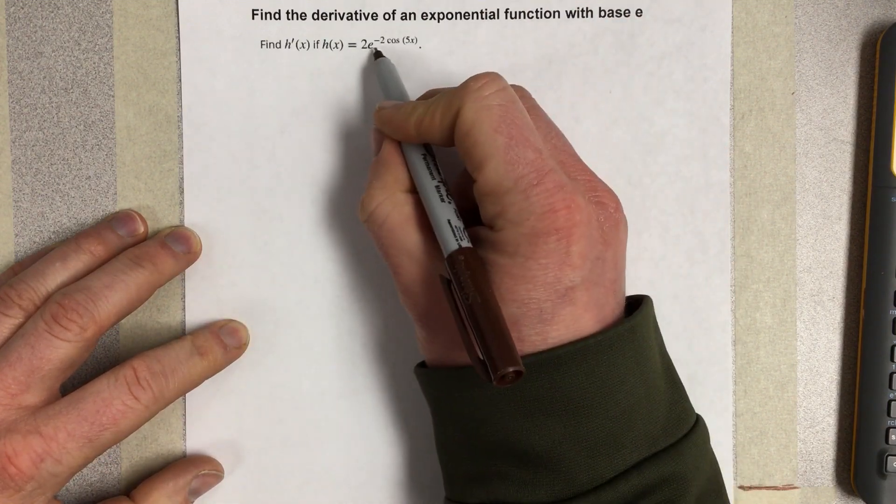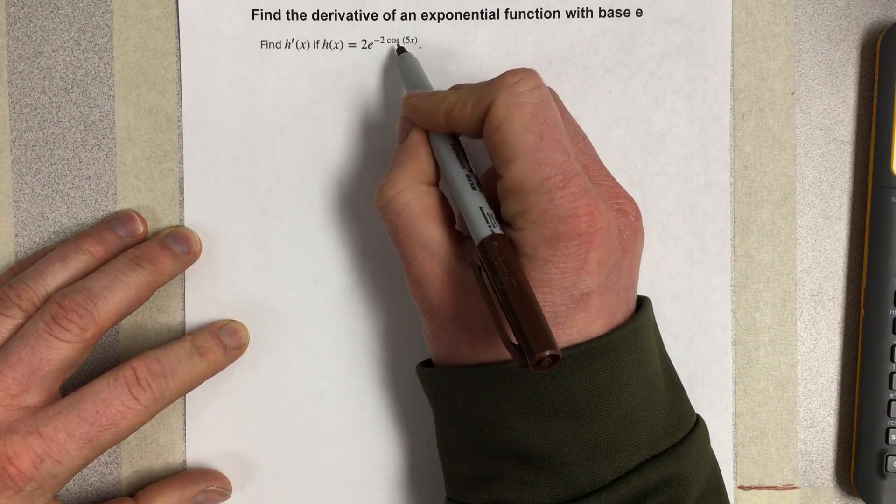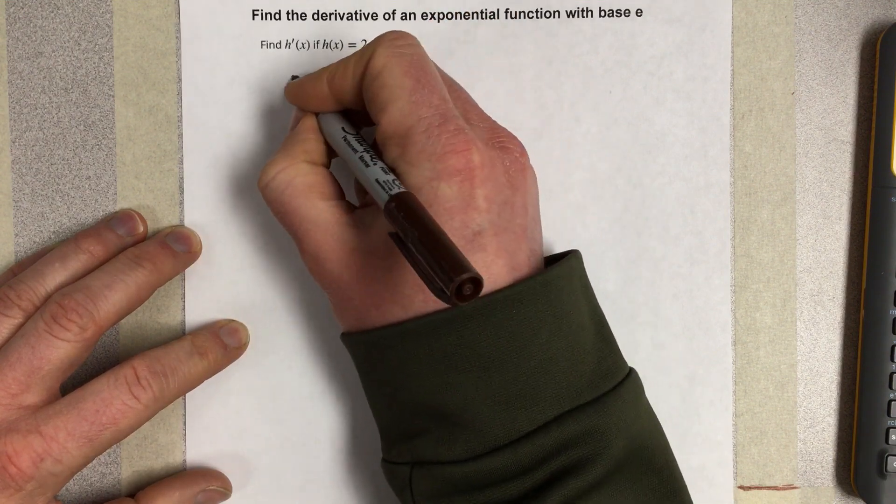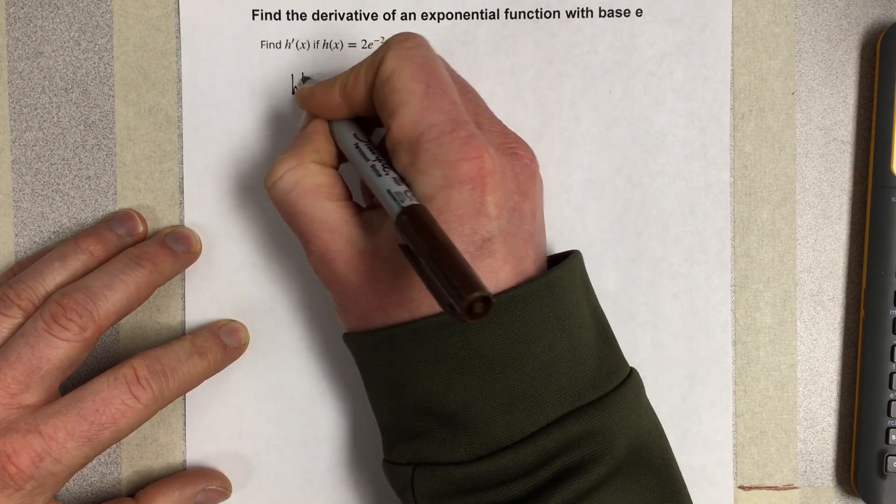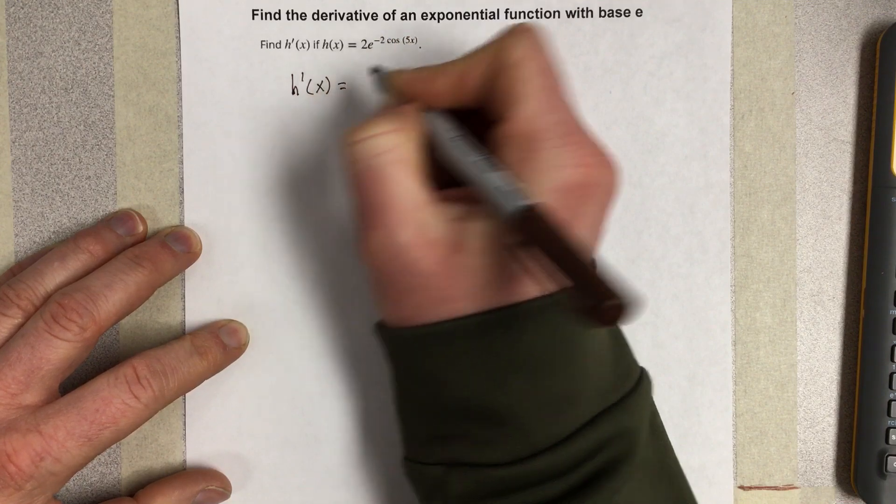So we have just a chain rule here. So we can say that h prime of x would equal,